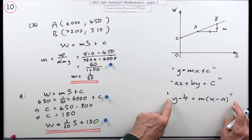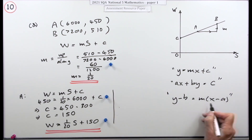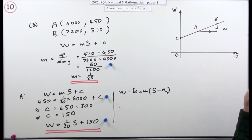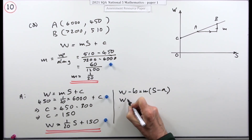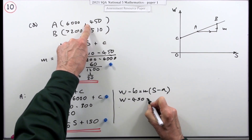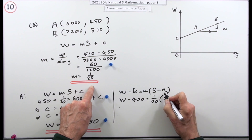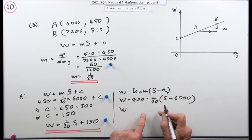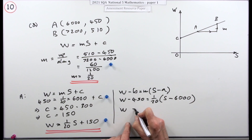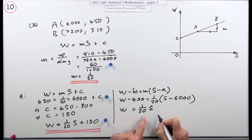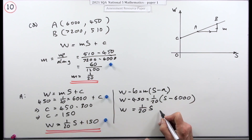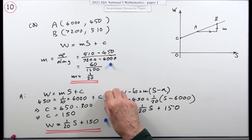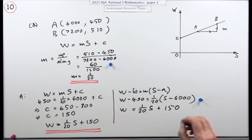The alternative is to use the point-gradient form, written as w minus b equals m times (s minus a), using point A. So: w minus 450 equals one twentieth times (s minus 6,000). Expanding: that's one twentieth of s minus 300, plus 450, giving plus 150 again. Substituting into that form earns a mark, and getting the same final result earns the last mark.